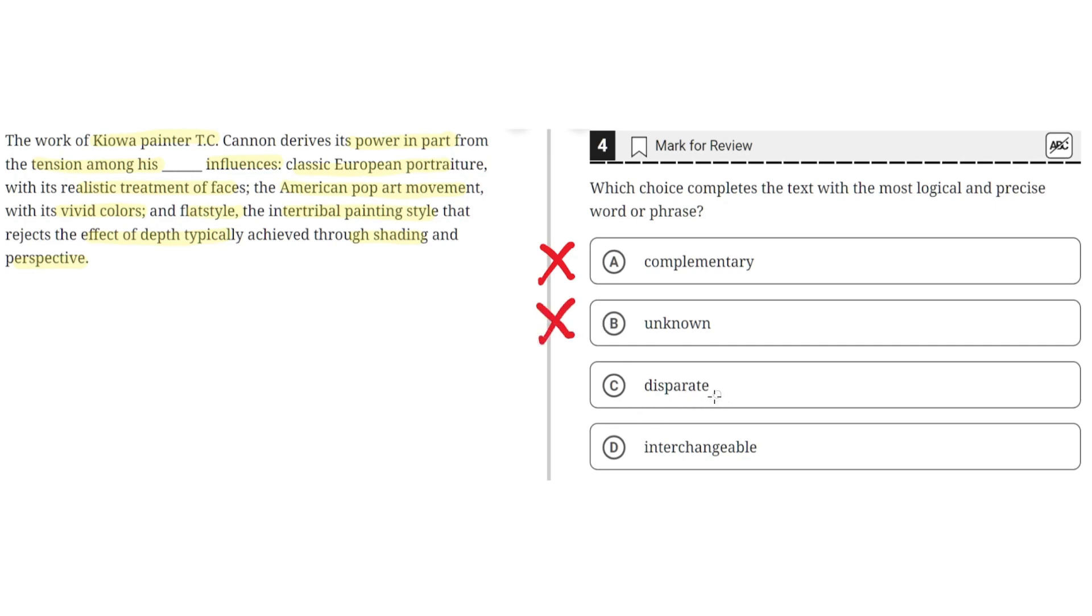C, disparate. This seems to be correct because disparate implies that these influences are distinct and not similar. And the second part of the sentence proves this where it describes the differences between them. Where European portraiture is realistic, the American pop art movement is vivid, and the intertribal flat style rejects the use of shading and perspective to achieve depth. So C seems to be the correct answer.